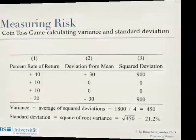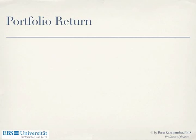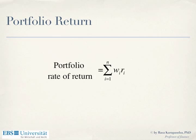When we have one stock we know how to calculate the return and the standard deviation. But usually people hold more stocks — you won't invest just in IBM, you'll invest in 10 different companies. How do you calculate the return of this portfolio? It will be the weighted average of returns. If you invest 10% in company one, 20% in company two, and 70% in company three, the portfolio return is 0.1 times return one plus 0.2 times return two plus 0.7 times return three.